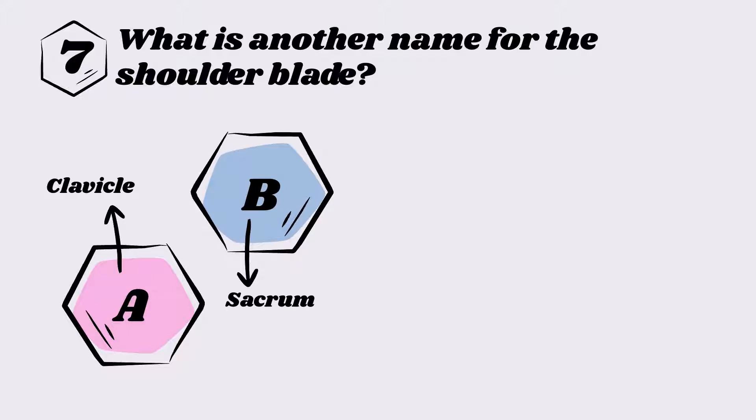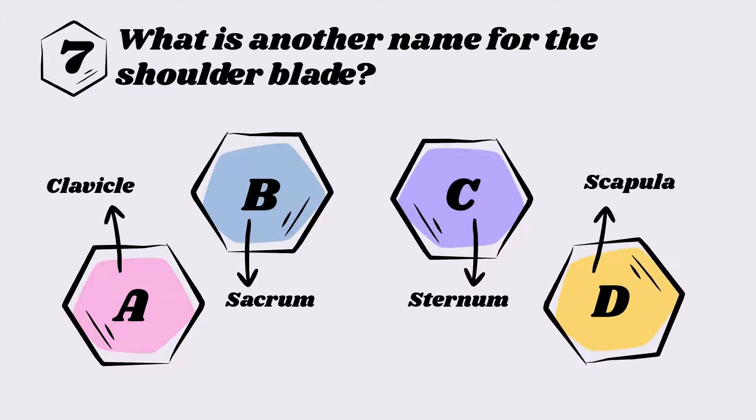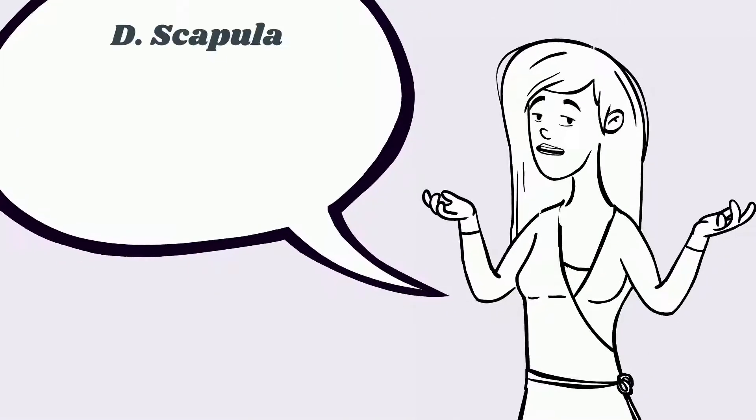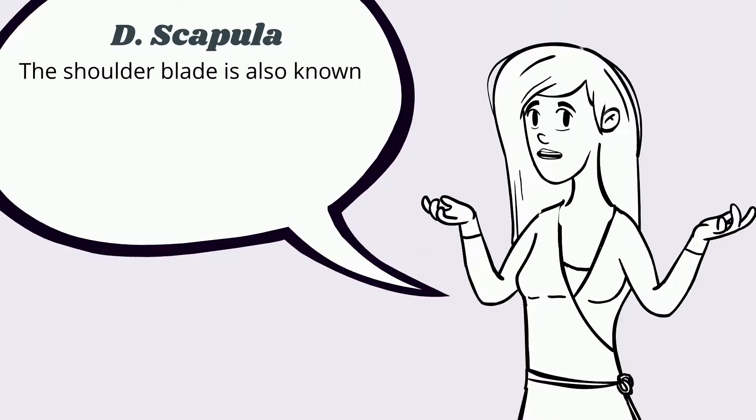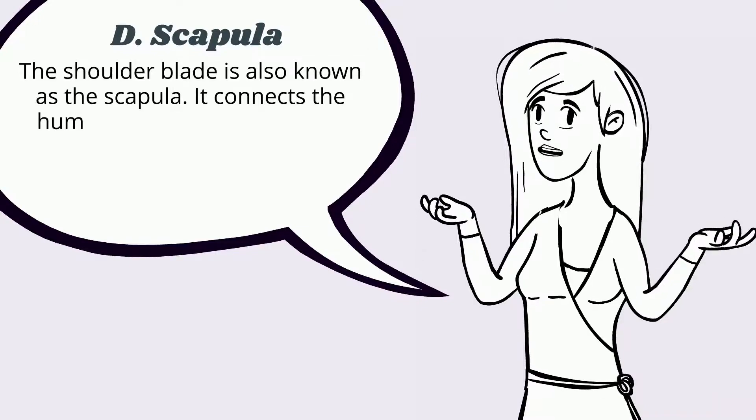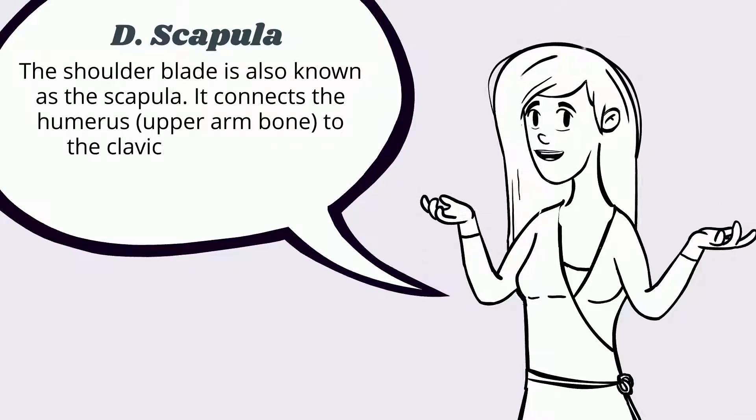Question seven: What is another name for the shoulder blade? A) Clavicle, B) Sacrum, C) Sternum, D) Scapula. The answer is D, scapula. The shoulder blade is also known as the scapula. It connects the humerus, or upper arm bone, to the clavicle, or collar bone.